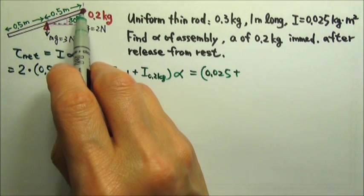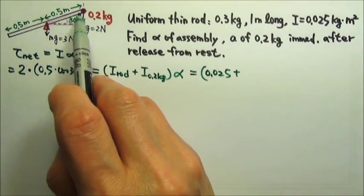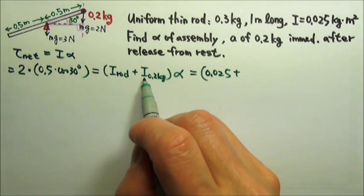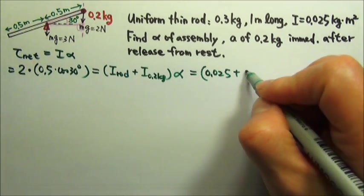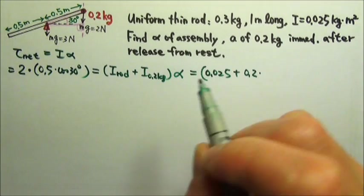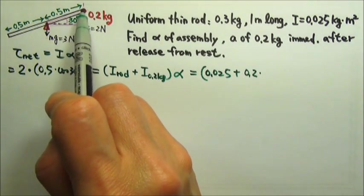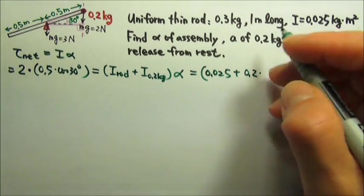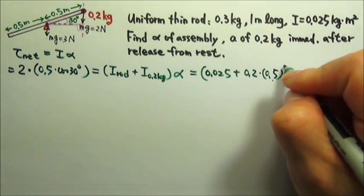The 0.2 kilogram attached at the end of the rod can be treated as a point mass, which means for this we can use the equation mr². So the rotational inertia of this point mass is 0.2, the mass, times r. The r is the distance between the point mass and the axis, which is 0.5. So this is mr².